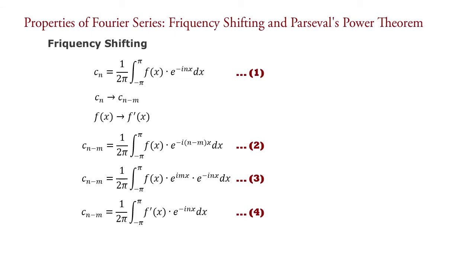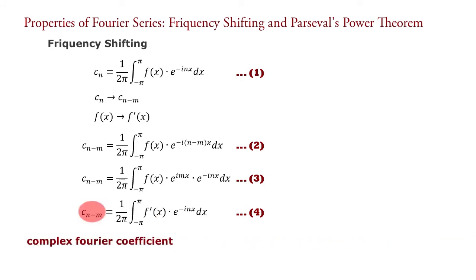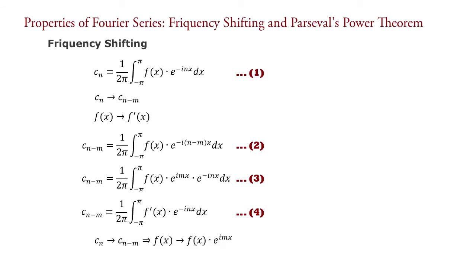From this equation we can say that f′(x) is a Fourier signal and C_{n minus m} is its corresponding complex Fourier coefficients. Comparing equations 1 and 4, we find that when the Fourier coefficient changes from C_n to C_{n minus m}, the Fourier signal changes from f(x) to f(x) times e raised to i·m·x, where m is the amount of frequency shifting. This is known as the frequency shifting property of Fourier series.